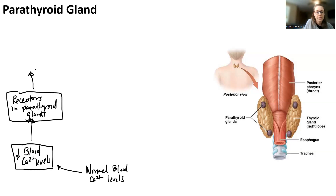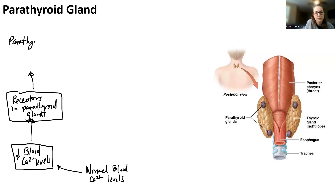The parathyroid gland is going to release a hormone as a response because it's the control center — it decides what to do. In this case, we're going to release parathyroid hormone.